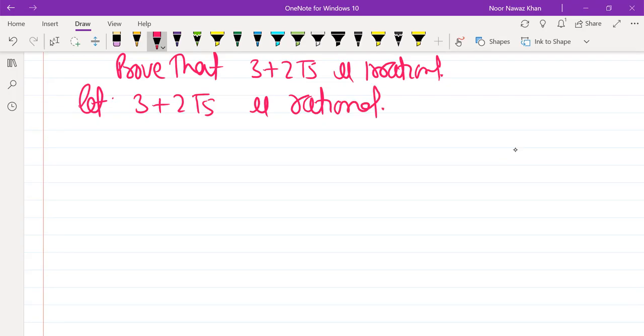Let 3 plus 2 root 5 is rational. If this is rational, then we can write it as p by q. So, let 3 plus 2 root 5 equals p by q. We don't use coprime.